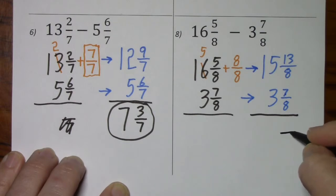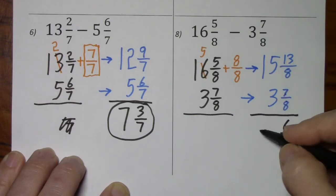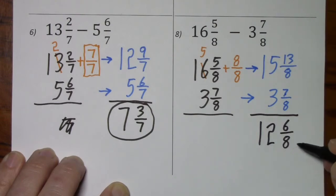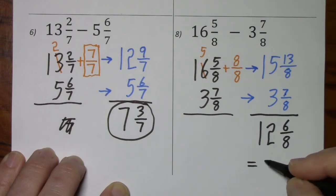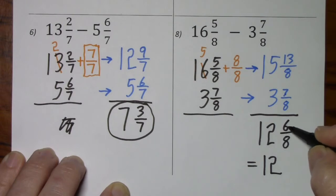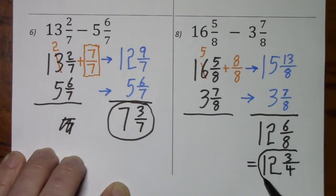Keep our denominator. 13 subtract 7 is 6. 15 subtract 3 is 12. But we can't leave it in this form, because 6 eighths can be simplified. So this becomes 12. Divide by 2, you're left with 3. Divide by 2, you're left with 4. So 12 and 3 fourths is our final answer.